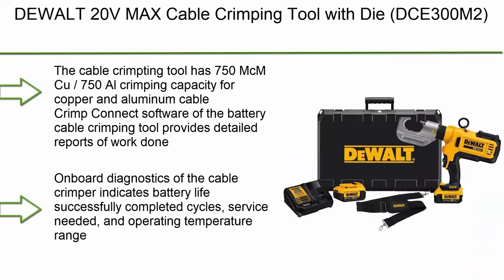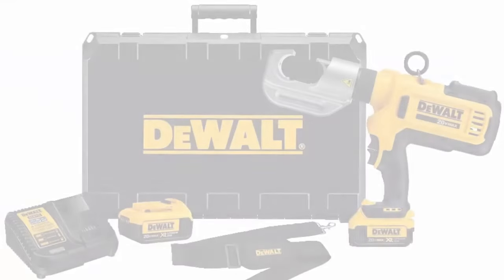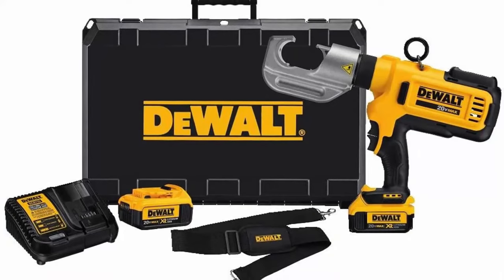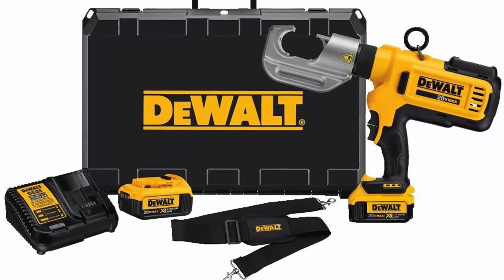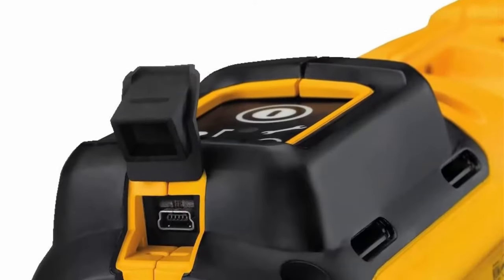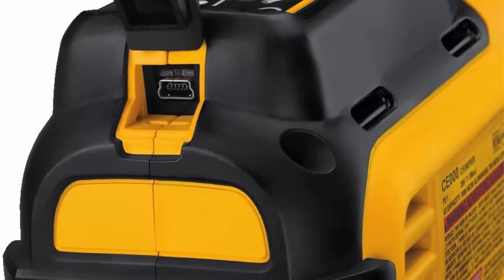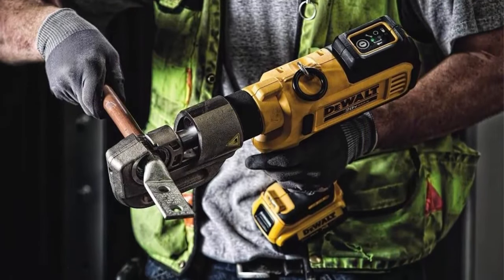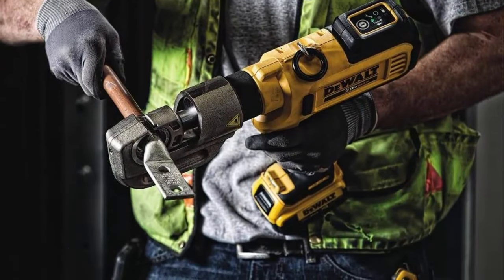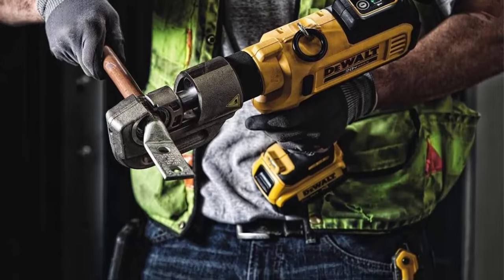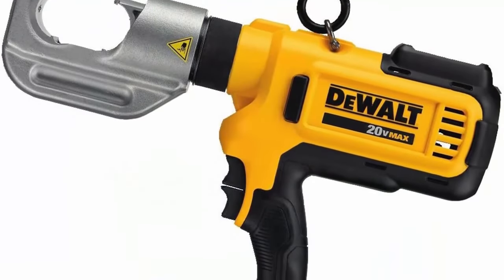Top 6: Dual 20V Max Cable Crimping Tool with Die, DC300M2. The cable crimping tool has 750 MCM/750L crimping capacity for copper and aluminum cable. Crimp Connect software provides detailed reports of work done. On-board diagnostics indicates battery life, successfully completed cycles, service needed, and operating temperature range.